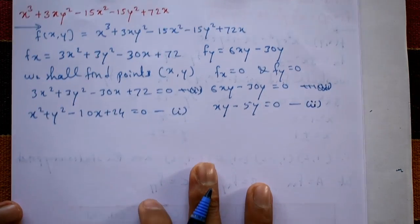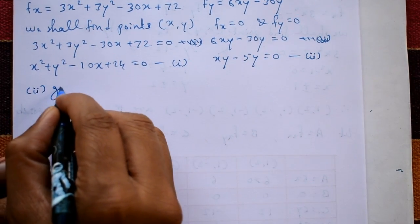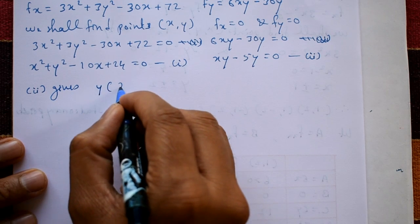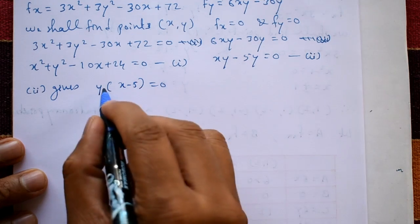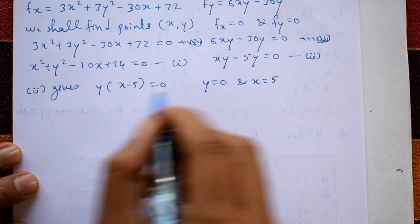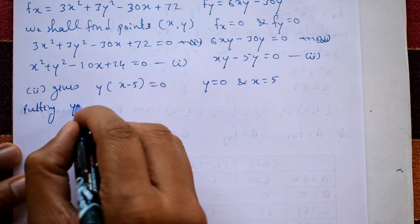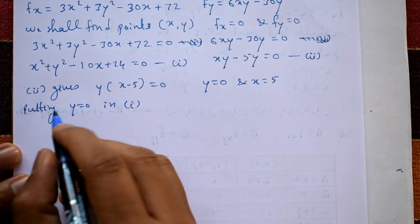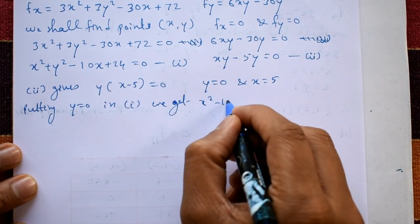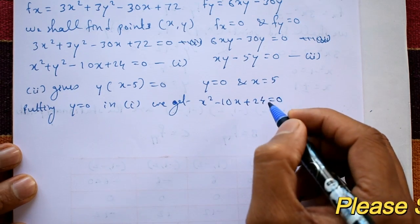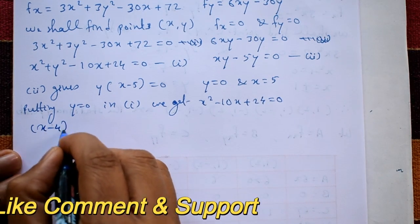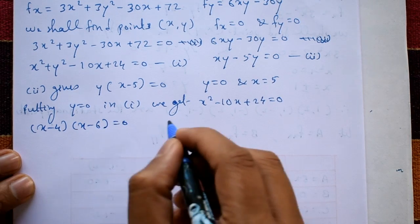From equation 2, take y common: y(x - 5) = 0, giving y = 0 or x = 5. First take y = 0 and substitute into equation 1. We get x² - 10x + 24 = 0, which by factorization gives (x - 4)(x - 6) = 0.